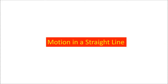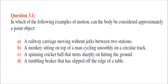Motion in a straight line. We are taking question and answer of motion in a straight line. The first question is: in which of the following examples of motion can the body be considered approximately a point object? A railway carriage moving without jerks between two stations — if the two stations are far apart, we can take the railway carriage as a point object.